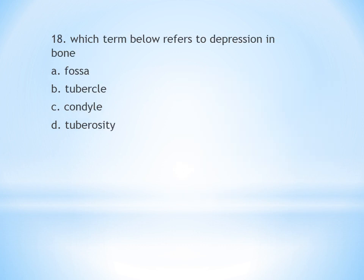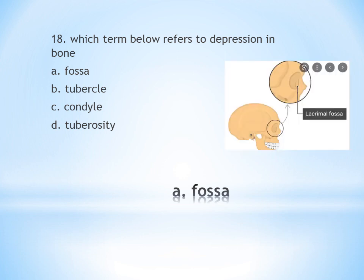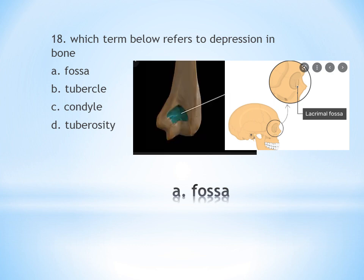Eighteenth question: Which term refers to a depression in a bone? A. Fossa, B. Tubercle, C. Condyle, D. Tuberosity. Fossa means depression in a bone. Tubercle, condyle, and tuberosity refer to protuberance or prominence. Examples: lacrimal fossa, olecranon fossa. Answer is A.